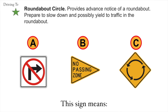Roundabout circle. Provides advance notice of a roundabout. Prepare to slow down and possibly yield to traffic in the roundabout. The correct answer is C. Roundabout circle.